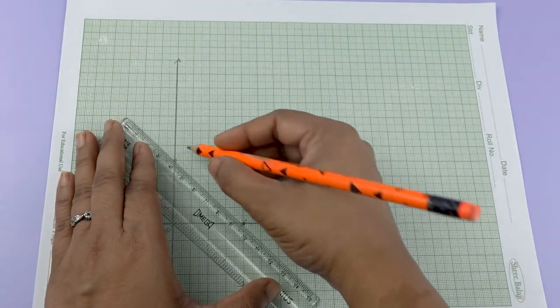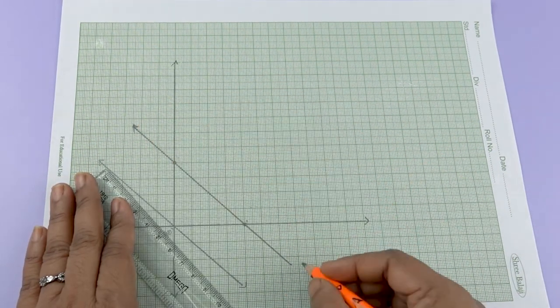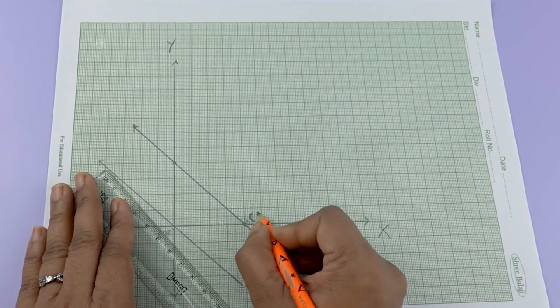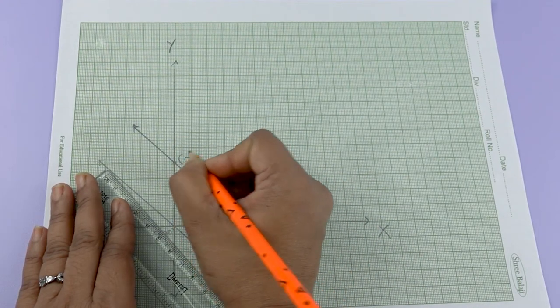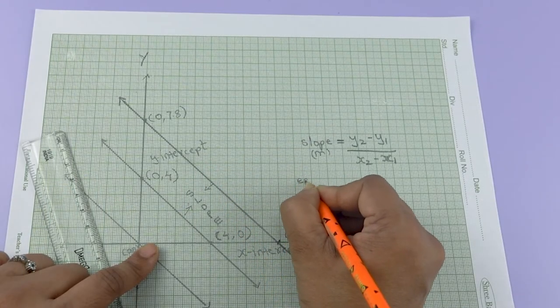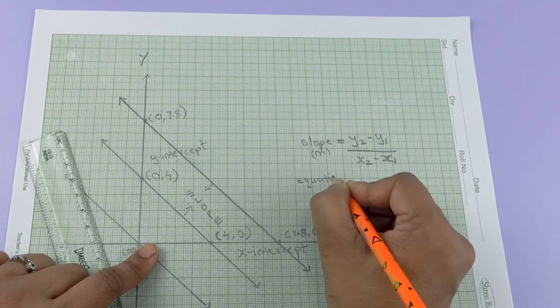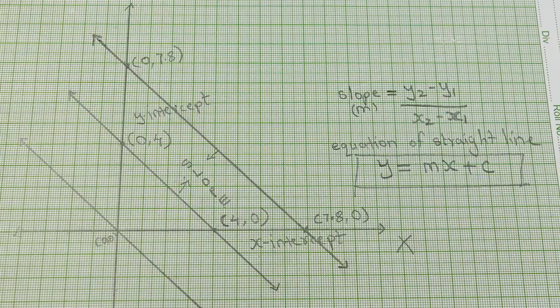The students discovered that in all cases except when the line is passing through the origin, the line cuts the x-axis at one point and y-axis at some other point. With this activity, I introduced the concept of the intercept and told my students that this is the second property to define a straight line. They could see that for two parallel lines, the slope is the same but not the intercept.